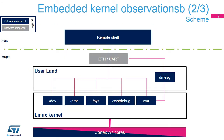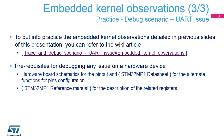This scheme is an extract from the Trace and Debug Architecture scheme. It focuses on the Linux kernel observation path and summarizes the information given in the previous slide. To put into practice embedded kernel observations, you can refer to the wiki article: Trace and Debug Scenario — UART Embedded Kernel Observations.